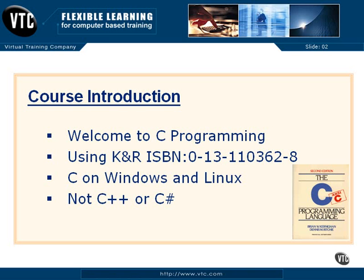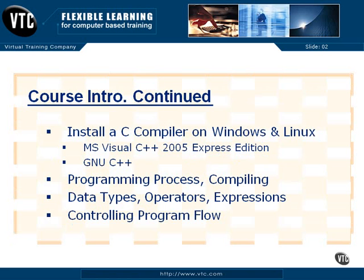We will be doing C on Windows and some on Linux. This is not a C++ or C Sharp course, just so you know that up front. You will be able to use what you learn in C in this course if you decide to go on and learn more about the object-oriented architecture of C++, or on to C Sharp and its particular environment. We will install a C compiler on a Windows platform and a Linux platform. We will be using Microsoft Visual C++ 2005 Express Edition, and even though it's created for C++, it will compile our C code and samples just fine.